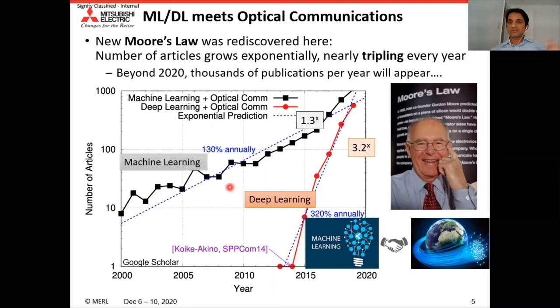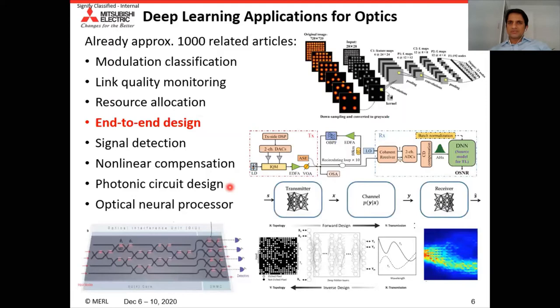Coming to deep learning applications for optics, data-driven approaches based on deep learning are much better and find a wide range of applications compared to model-based approaches. Some applications include modulation classification, link quality monitoring, resource allocation, end-to-end design, signal detection, and nonlinear compensation. Our focus here is on the end-to-end design.